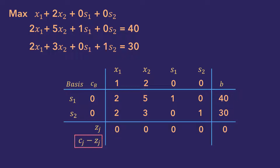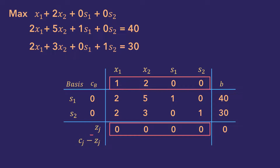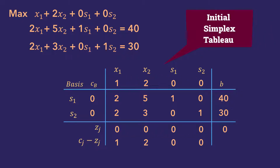The cj minus zj row is the net evaluation row. It represents the net profit resulting from introducing 1 unit of each variable into the model. It is computed by taking each cj value minus zj. So for x1, we have 1 minus 0; 2 minus 0 for x2; 0 minus 0 for s1 and for s2. And that completes the initial simplex tableau for the first model.